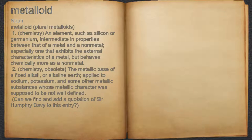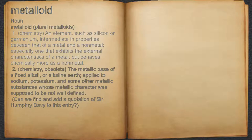METALLOID. Noun. 1. Chemistry. An element, such as silicon or germanium, intermediate in properties between that of a metal and a nonmetal, especially one that exhibits the external characteristics of a metal, but behaves chemically more as a nonmetal.